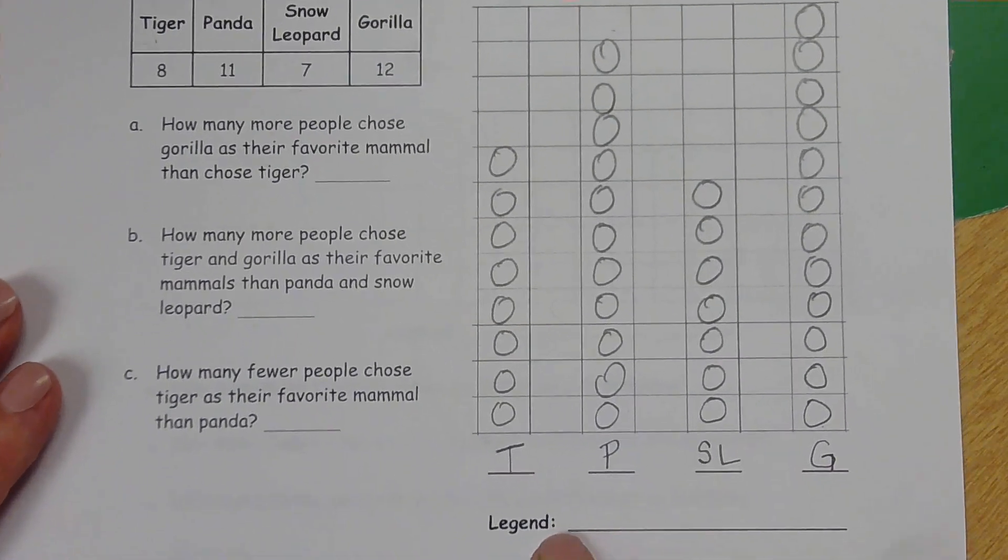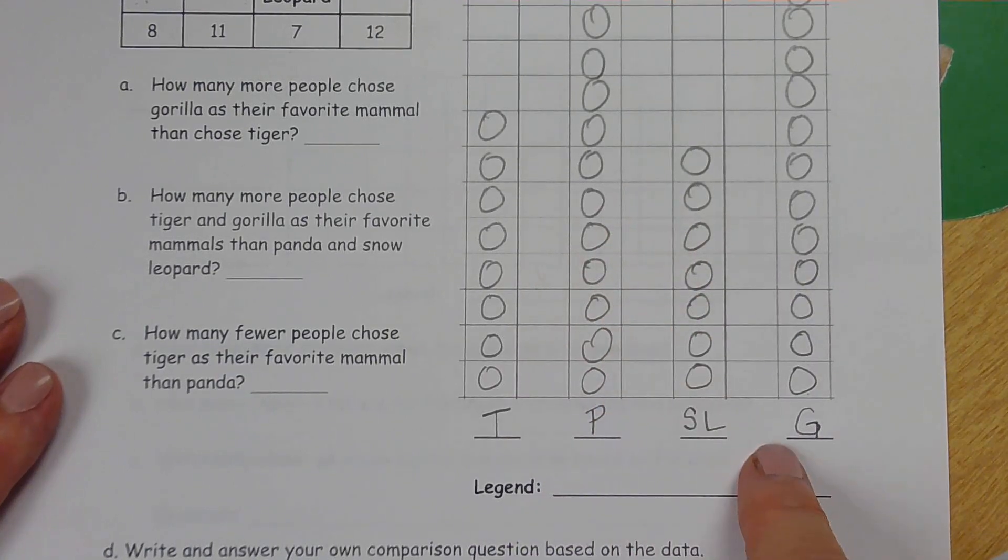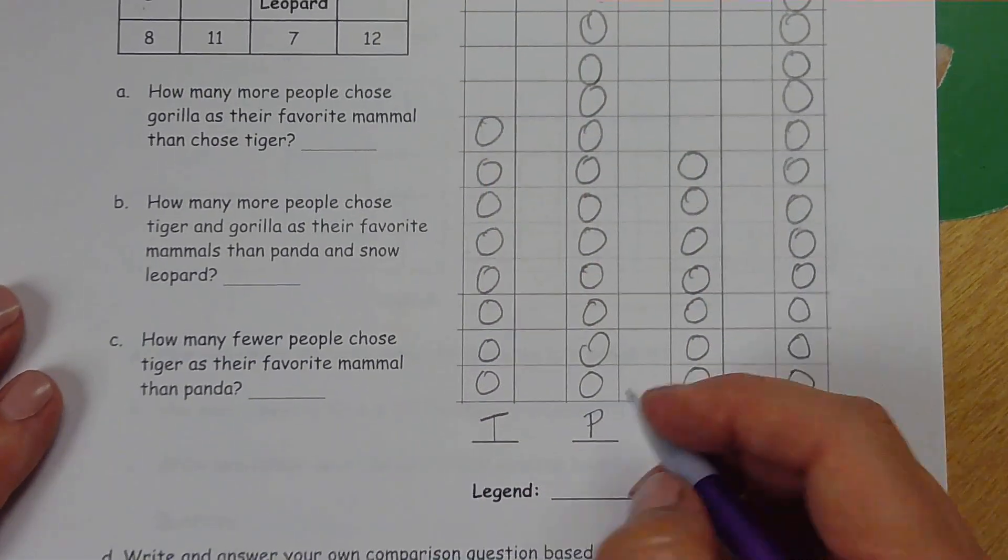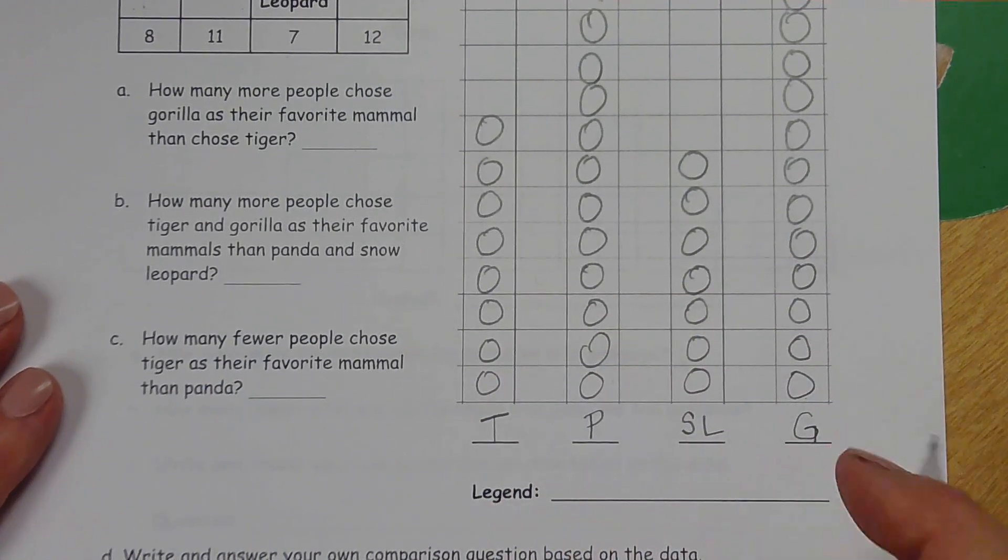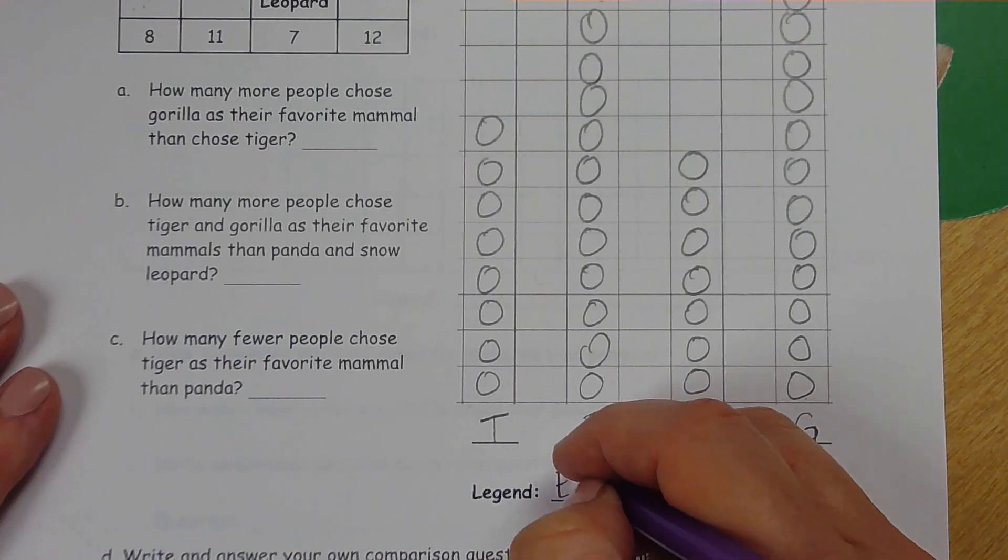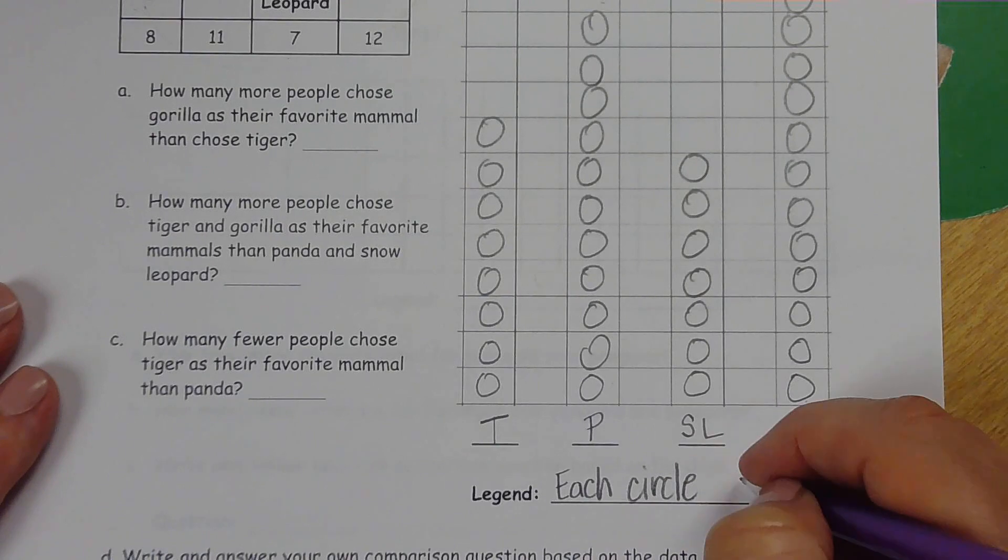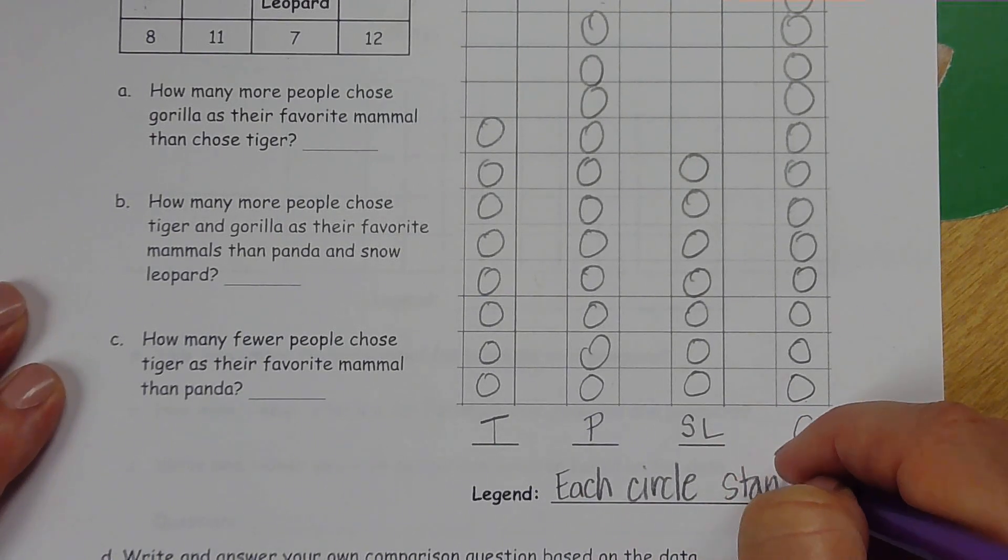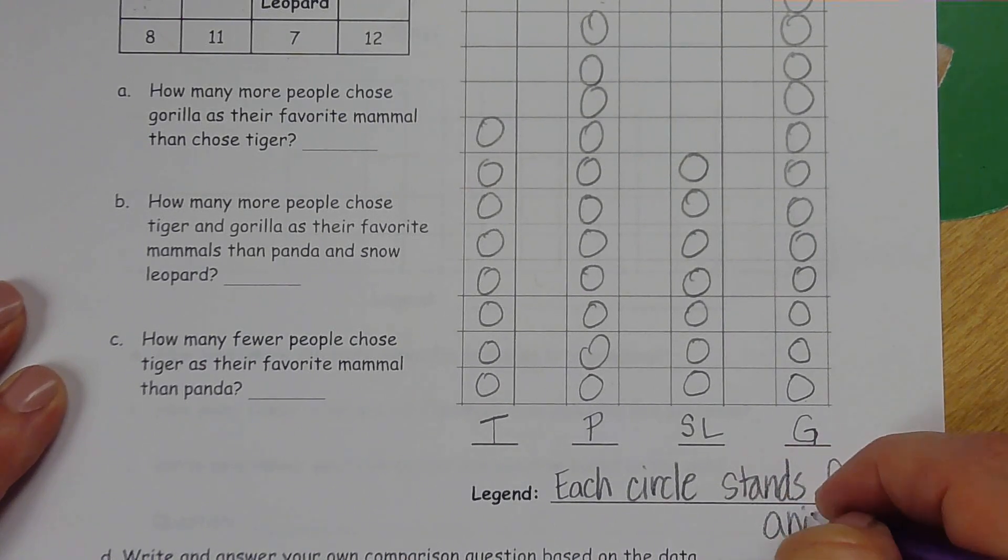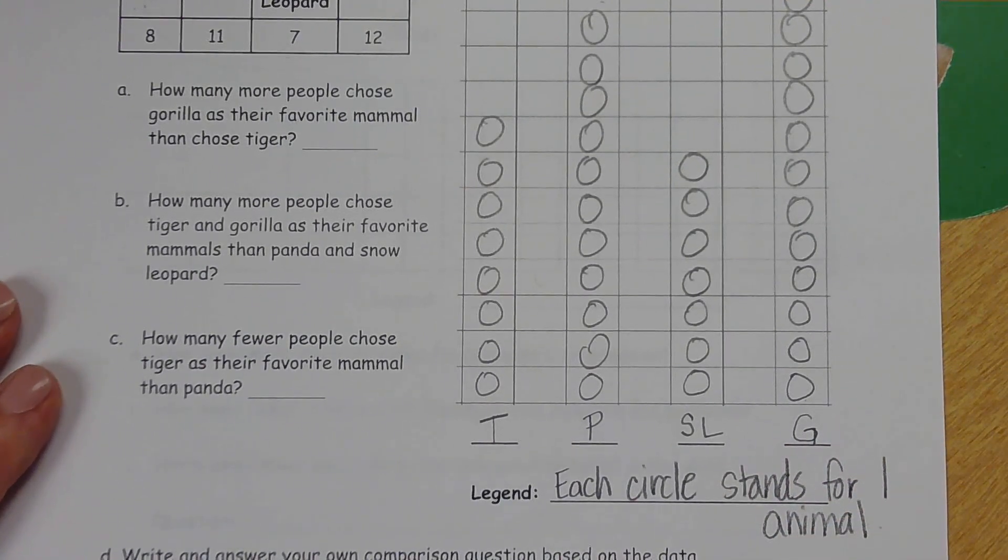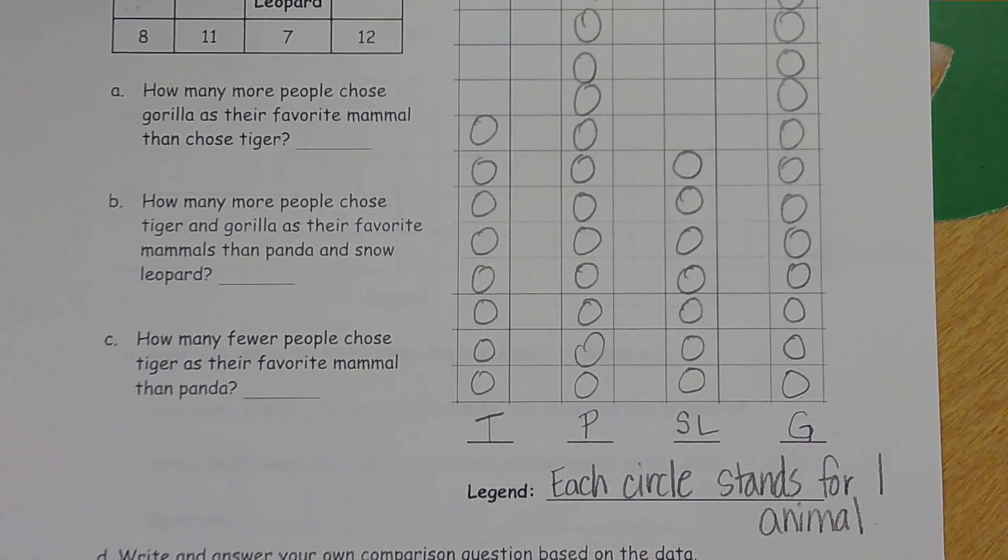Now the legend is the key to telling someone else how to read our graph. For every one of those circles, it stands for one animal. So that's what we're going to write: Each circle stands for one animal.